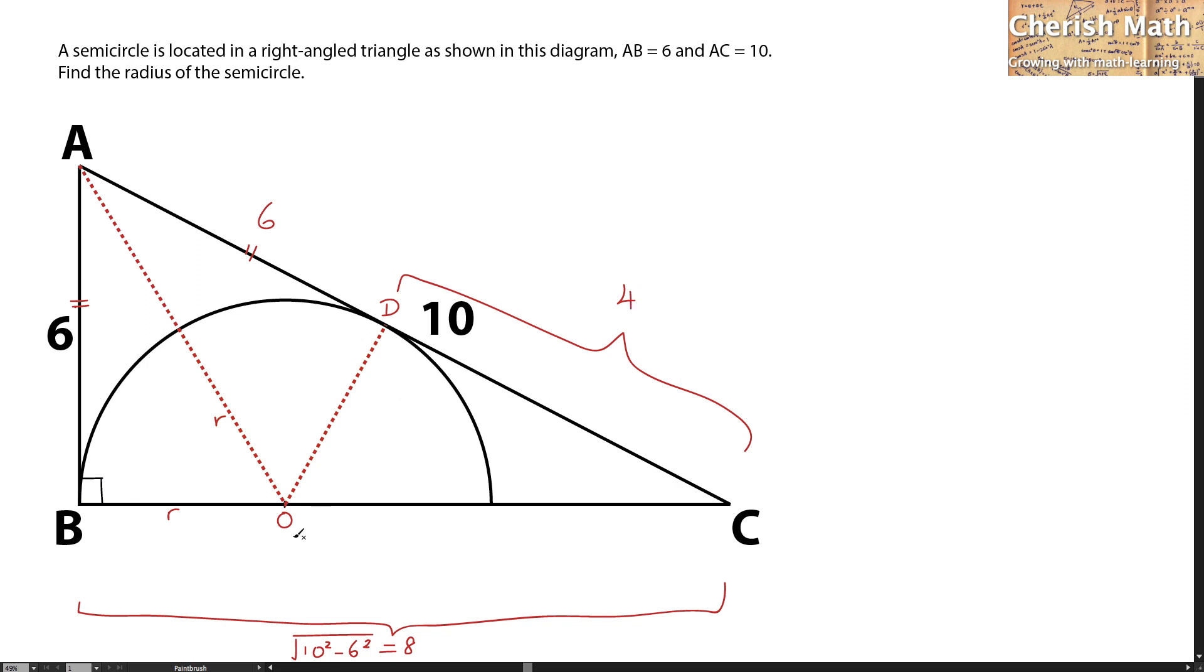For the length of OC, we use the entire length of BC minus R. That would be 8 minus R. The length of OD is the radius of the circle, denoted as R. This radius is perpendicular to line AC since AC is tangent to the circle at point D.